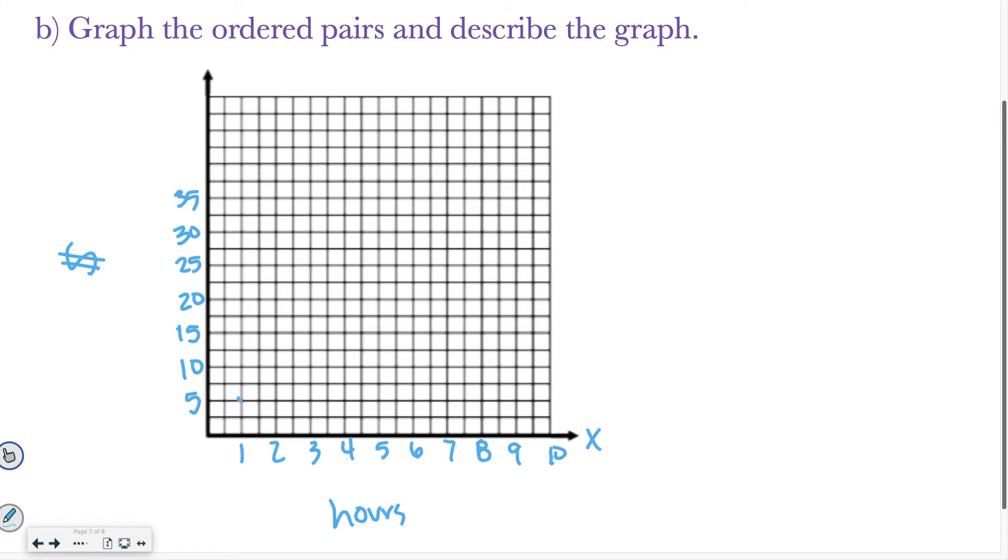All right. So for one hour, he earns $5. For two hours, or sorry, two hours is 10. For three hours, he earns 15. And in five hours, he earns $25. And that is what my graph should look like.